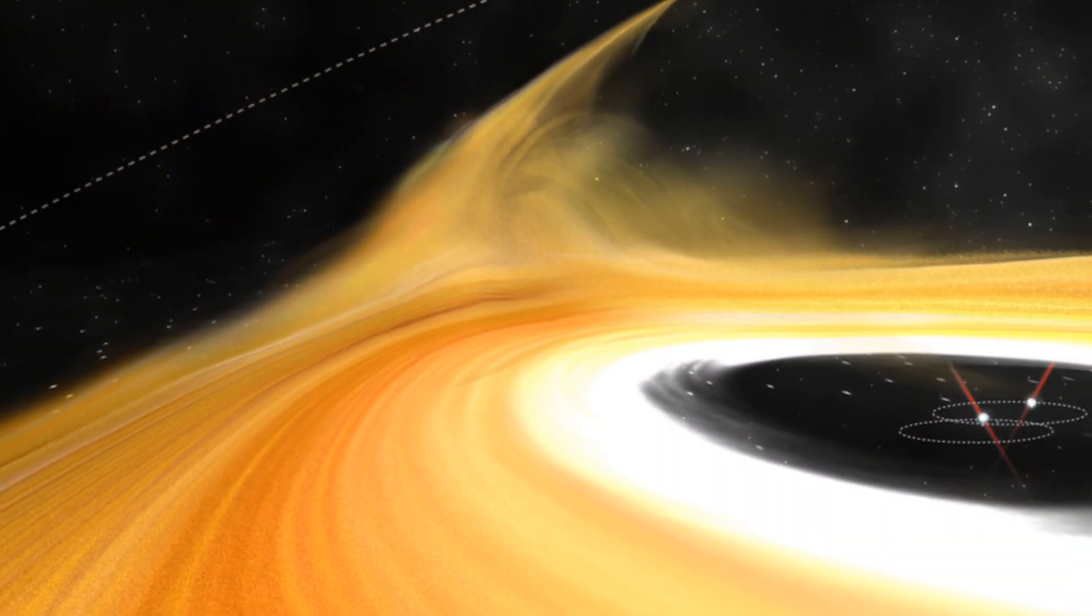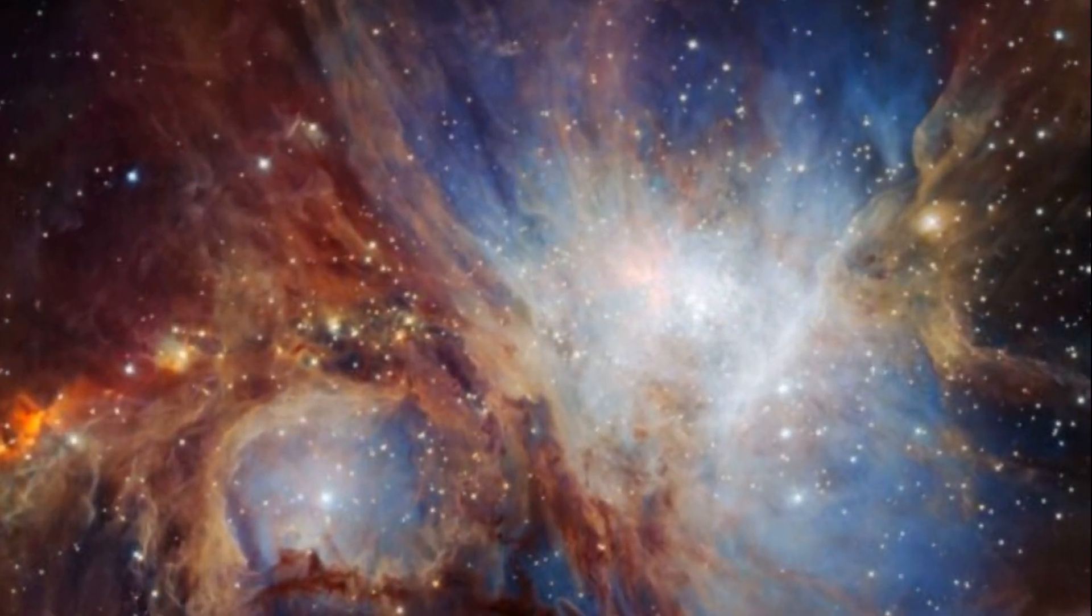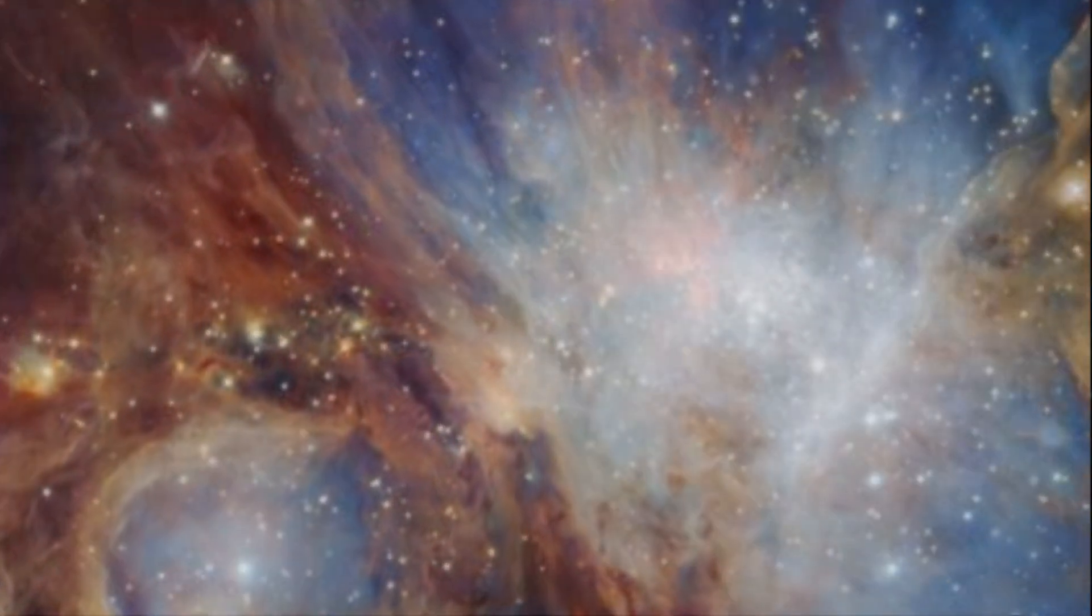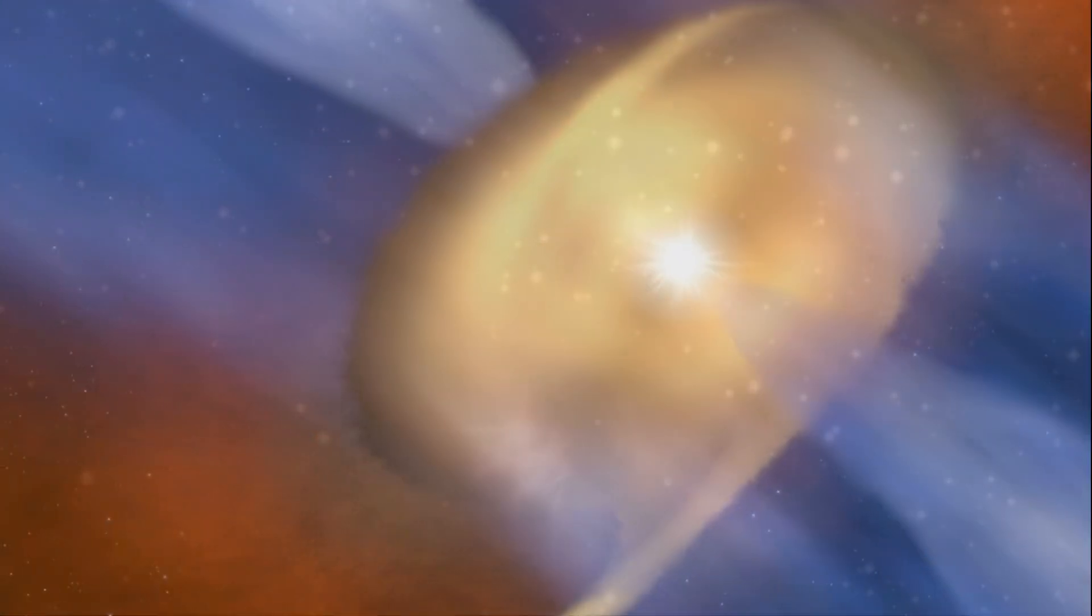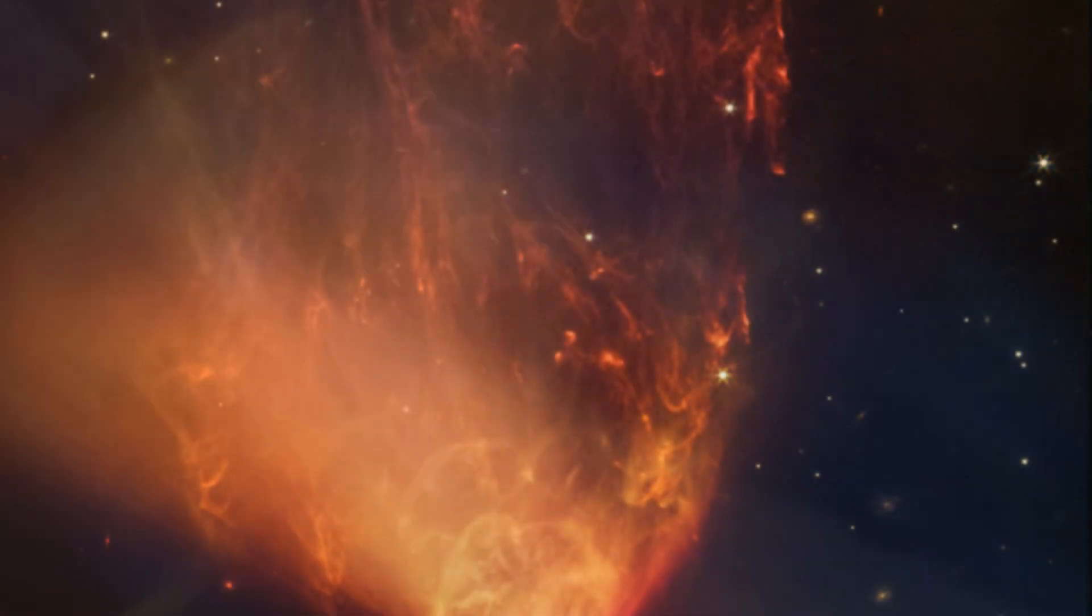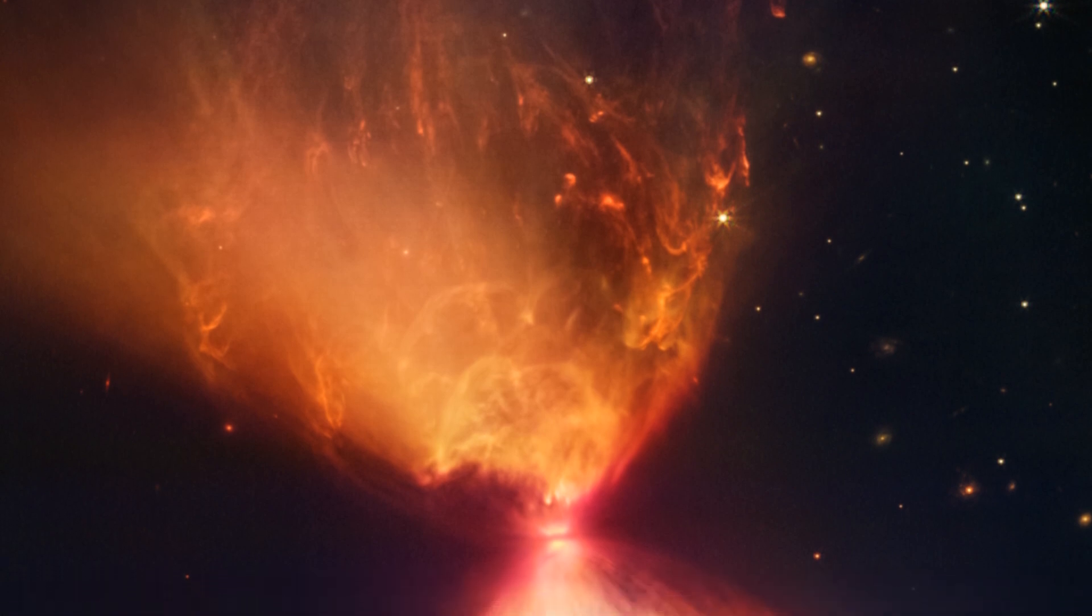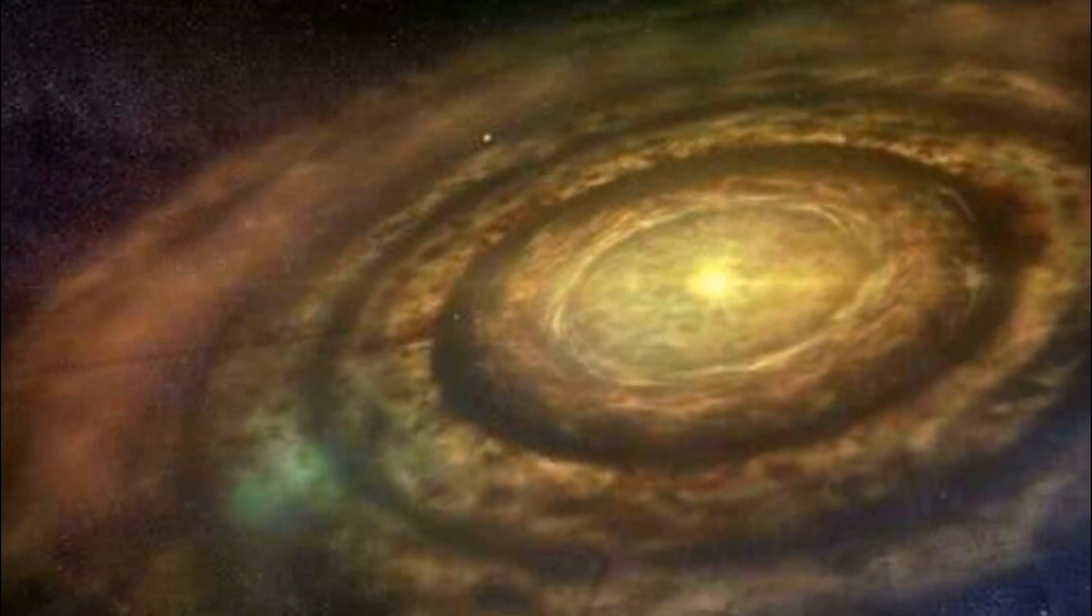These protoplanetary disks are the locations where planets, moons, and other smaller bodies begin to form. The protostar phase can last millions of years, during which the star continues to grow and evolve. Eventually, the temperature and pressure in the core of the protostar become high enough to initiate nuclear fusion.